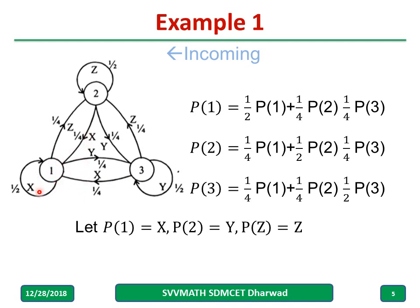They are coming from 1st state, another is from 2nd state, another is from 3rd state. Hence, I write probability of 1 equal to 1 by 2 probability of 1, because 1 by 2 it is, and there is 1 by 4, and there is 1 by 4.